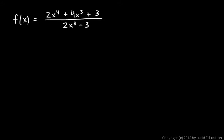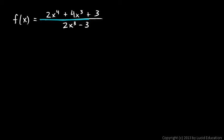We notice here that the degree of the numerator — the numerator is degree 4 — is larger than the degree of the denominator, which is degree 3. When the degree of the numerator is larger than the degree of the denominator, in order to find the asymptote, we have to actually do the polynomial division. This polynomial divided by this one.